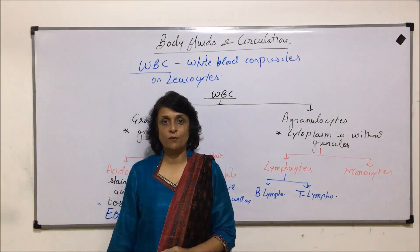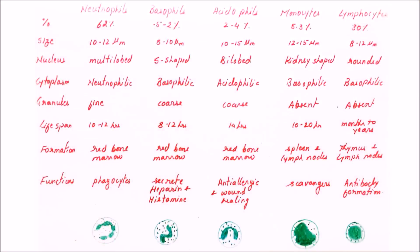So let us see the table now. We are looking at the table which is showing us the comparison between all five types of WBCs: neutrophils, basophils, acidophils, monocytes, and lymphocytes. Let us now first see the diagrams.